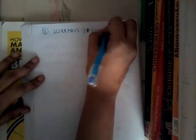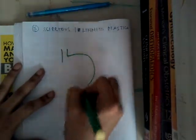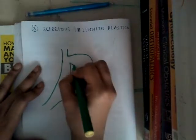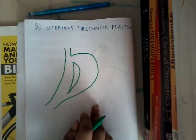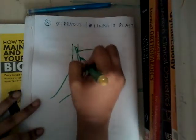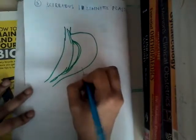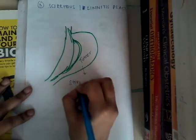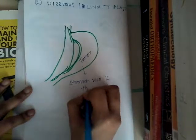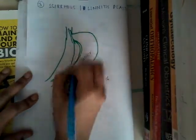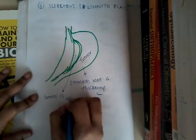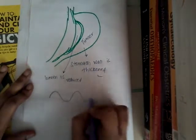The third type is scirrhous or linitis plastica. In this type of carcinoma, the stomach wall is thickened. The stomach wall is completely thickened, thus reducing the lumen. The tumor causes the stomach wall to thicken and the lumen to be reduced.